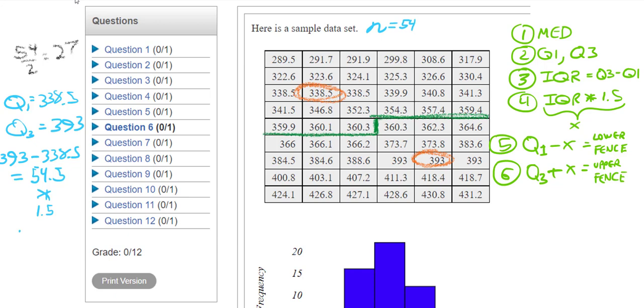And then we have to multiply that by 1.5 to give me that value x I talked about. So 54.5 times 1.5, that gives me 81.75. So this is the number that I'm going to subtract from my Q1 and add to my Q3 to find my lower fence and upper fence. So let's do that. I've got some space over here. Let's go with our Q1, which is 338.5. I'm going to subtract my 81.75. And then I'm going to take my 393, that's my Q3, and add that 81.75.